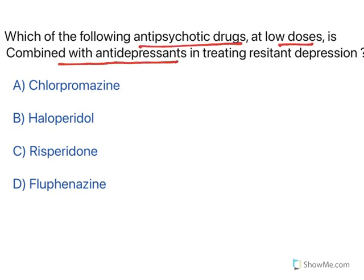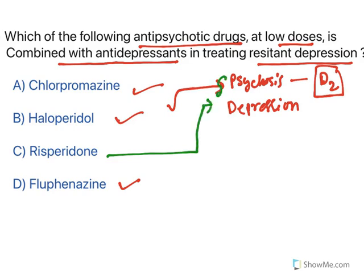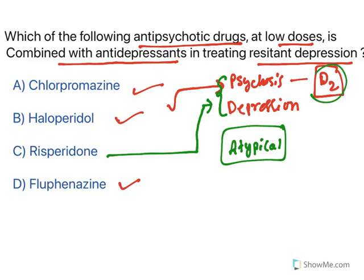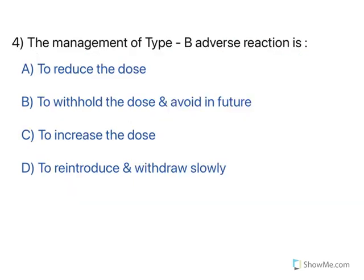Which antipsychotic drug at low doses is combined with antidepressants to treat resilient depression? Typical antipsychotics like chlorpromazine, haloperidol, and fluphenazine selectively block D2 receptors to treat psychosis. Risperidone is an atypical antipsychotic — along with blocking D2 receptors it has additional actions, allowing it to treat psychosis as well as depression and mood disorders. Option C is correct.